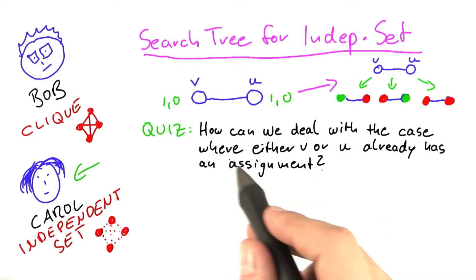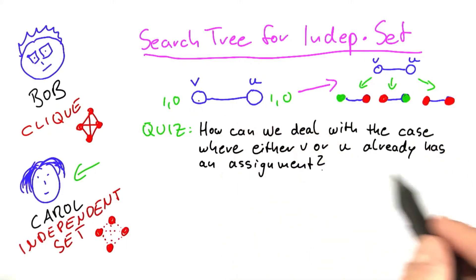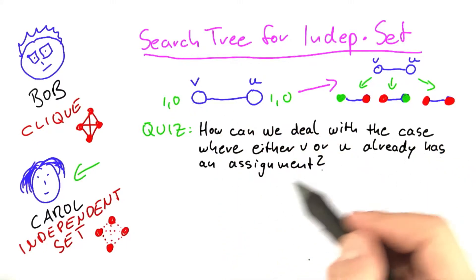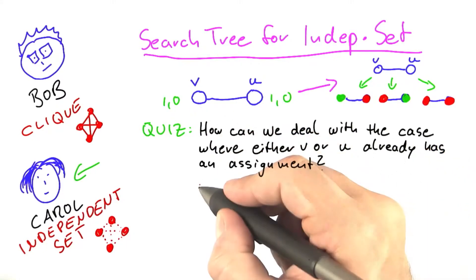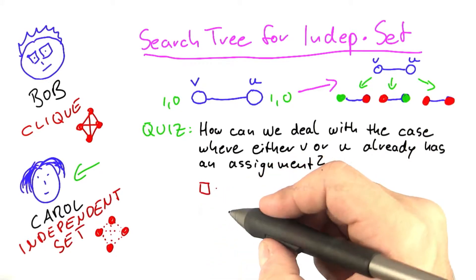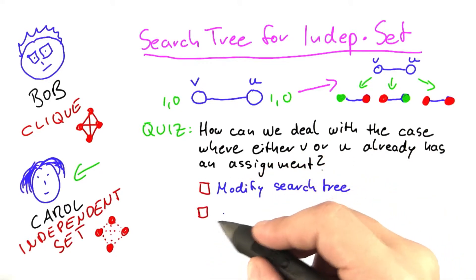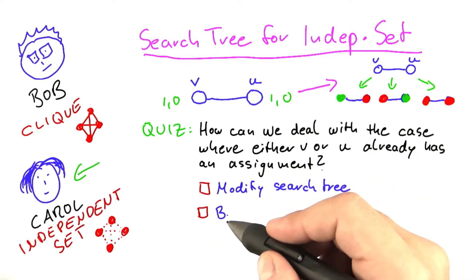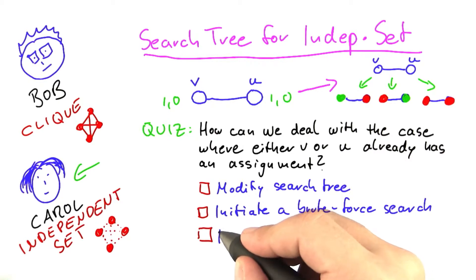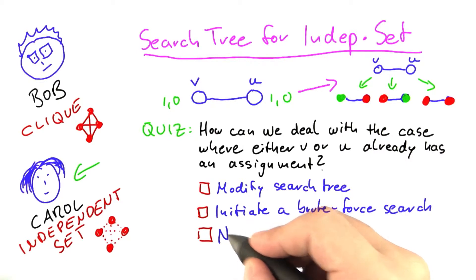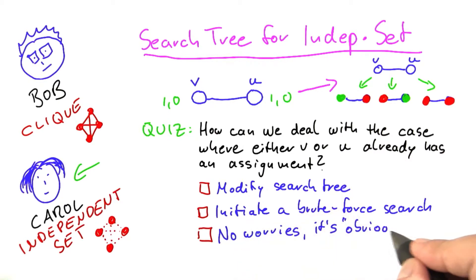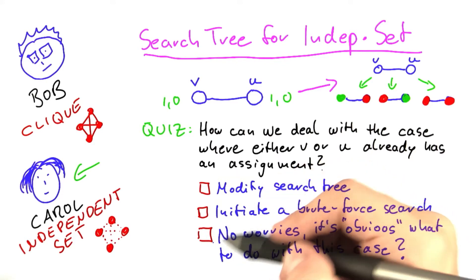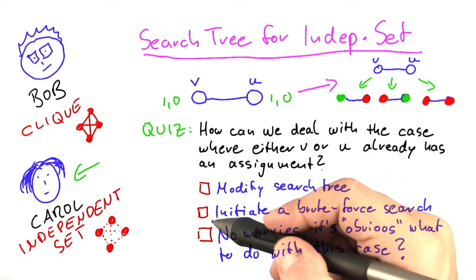How can we deal with the case where either V or U already has an assignment? Do we have to modify the search tree for that? Do we have to initiate a brute force search in that case? Or is it the case that we do not need to vary at all? Because it's actually quite obvious what to do with those vertices. Please select whichever you think is correct.